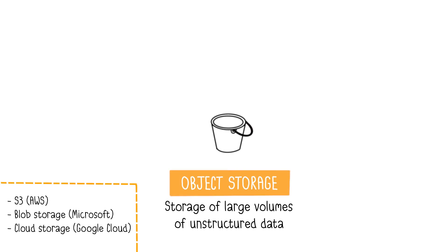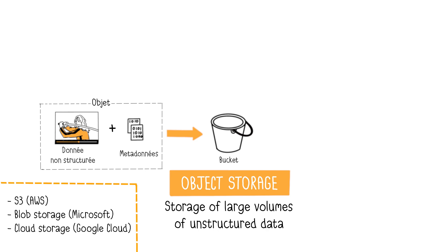Object storage is ideal for storing large volumes of unstructured data, such as videos, images, static webpages, text, audio files, emails, etc. Unstructured data doesn't conform to predefined models, as seen in relational databases, hence the term non-structured. Cloud providers' object storage offerings include AWS S3 (Simple Storage Service), Azure Blob Storage, and Google Cloud Storage. Objects contain the data itself, metadata — for example, video recording locations and actors — and a unique object identifier.